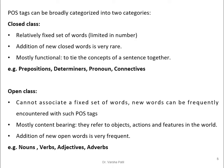POS tags can be broadly categorized into two categories: closed class and open class. Closed class is a relatively fixed set of words, limited in number; addition of new closed-class words is very rare. They are mostly functional — they tie the concept of the sentence together. For example, prepositions, determiners, pronouns, and connectives come under the category of closed class.